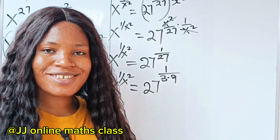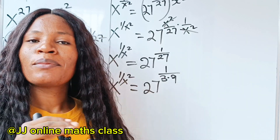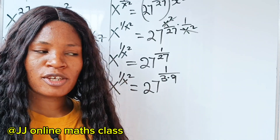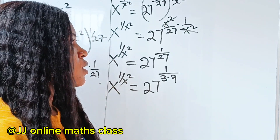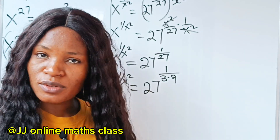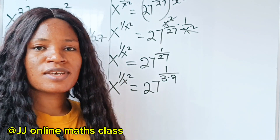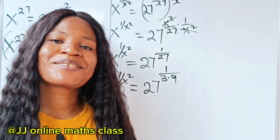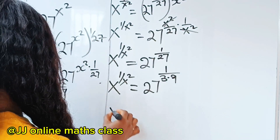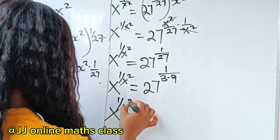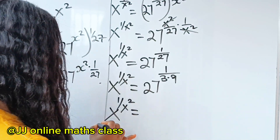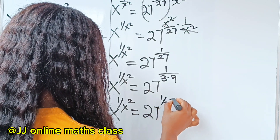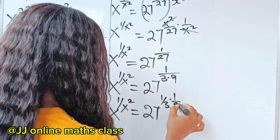If this is the first time you're coming across this channel, please click on the subscription button and on your notification bell so that you don't miss any of our amazing videos. And please give us a thumbs up if you're actually enjoying this video, thank you so much. Now we have that x to the power of 1 over x squared is equal to 27 to the power of 1 over 3 multiplied by 1 over 9.